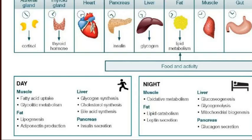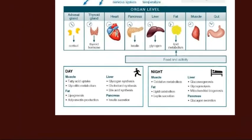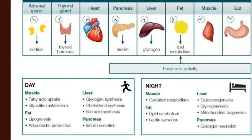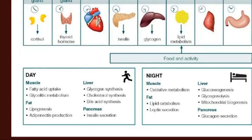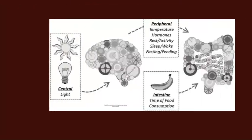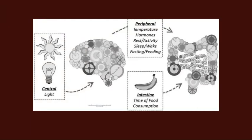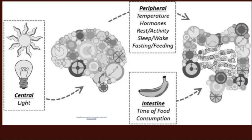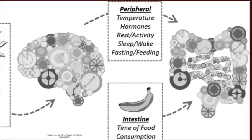The suprachiasmatic nucleus is a central player in this, as are all of the clocks in our cells, organs, and systems. The image shows that muscles, liver, pancreas, and fat all do different things depending on what time of day it is. Looking at the gastrointestinal tract specifically: the message regarding light or darkness coming into the SCN sends signals to the gastrointestinal tract to do certain things at certain times. We saw how bowel movements stop at night because the gut has received the message from the brain that it's night-time.